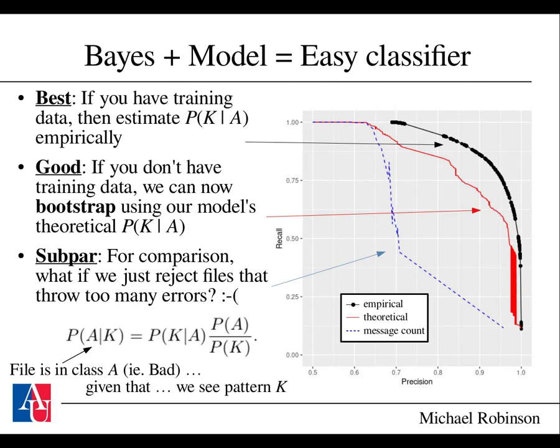Taking this model, you can apply Bayes' rule to turn it into an easy classifier. If you estimate the message pattern probability from the class probability you could do very well; if you don't have that information you can bootstrap and still do reasonably well. The state-of-the-art baseline would simply flag a file as bad if it throws too many errors. The precision-recall plots show the area under the curve is not great for that baseline but much better if you have a good data set to build from.